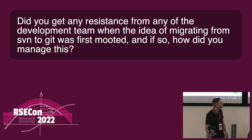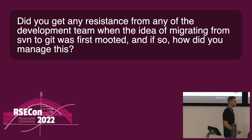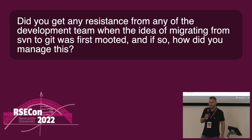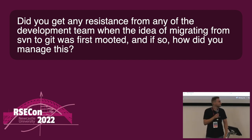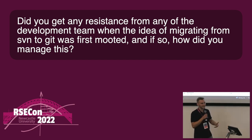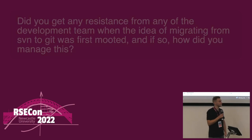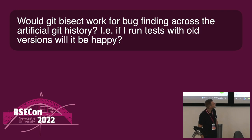Question: Did you get any resistance from the development team when the idea of migrating from Subversion to Git was first raised? Actually, it was quite the opposite — everybody was very happy that we were going to migrate to Git, because if you've ever done merging in an old Subversion branch, you know what I mean. I didn't have to persuade anyone on our team; they were all just happy that we could do the migration.